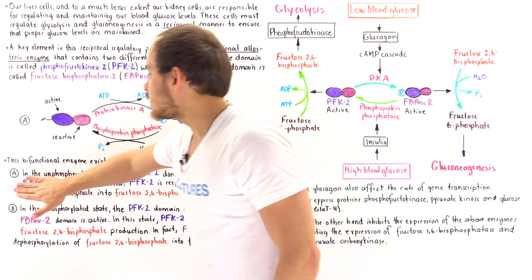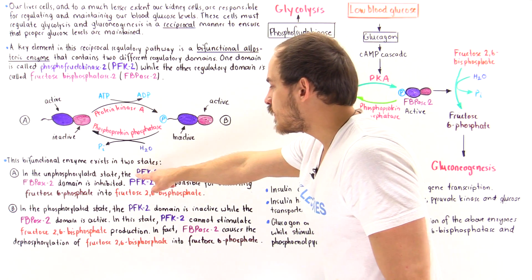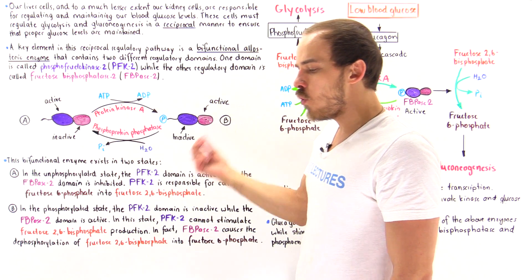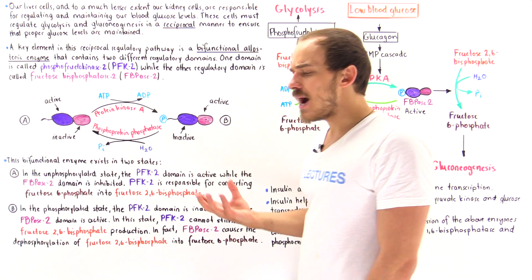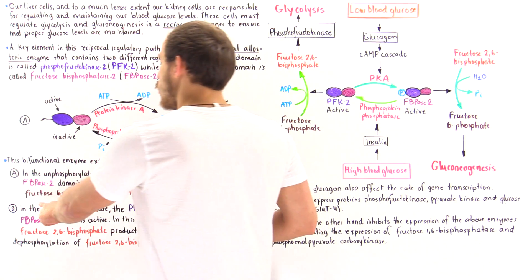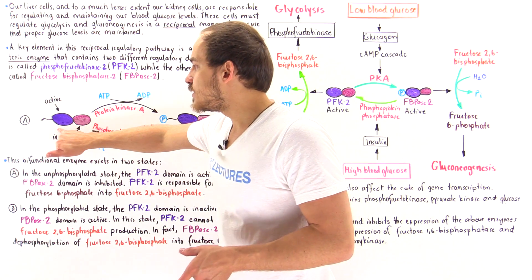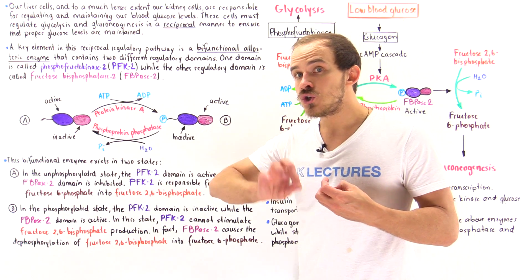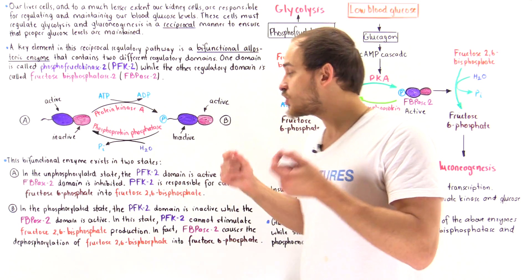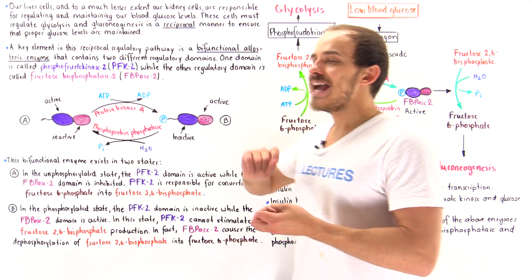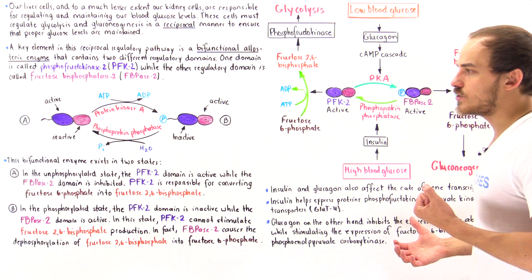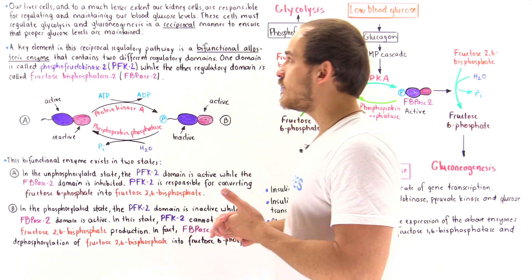In State A, the unphosphorylated state, the active PFK2 domain phosphorylates fructose-6-phosphate — an intermediate in both glycolysis and gluconeogenesis — converting it into fructose-2,6-bisphosphate. We discussed fructose-2,6-bisphosphate in the previous lecture; it is an allosteric effector molecule that affects the activity of enzymes in both glycolysis and gluconeogenesis.